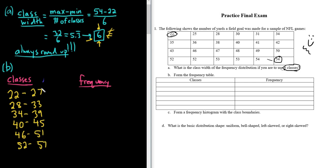Quick recap: write down the smallest number, add the class width, work down, put dashes, then to get the upper limit you look at 28 and ask what's the whole number right before it — 27 — then add the class width and work down for the rest. For the frequencies, count all the numbers between 22 and 27 including those endpoints.